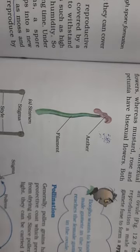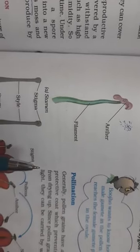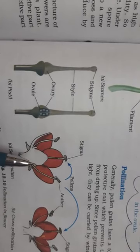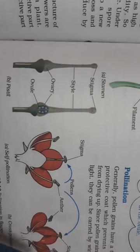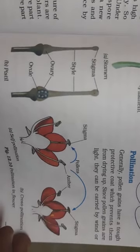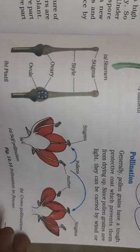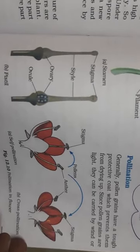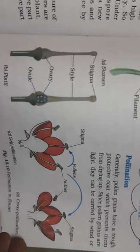I hope this much is clear to all of you. The types of pollination — self-pollination and cross-pollination — I will explain in the next video. Please keep reading the book and come prepared for the next class. Thank you.